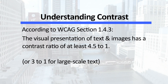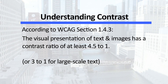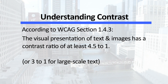One important area for accessible UX is concerned with color and contrast. According to the WCAG 2.0 guideline 1.4.3 for contrast level AA, the visual presentation of text and images of text must have a contrast ratio of at least 4.5 to 1, or 3 to 1 for large-scale text.